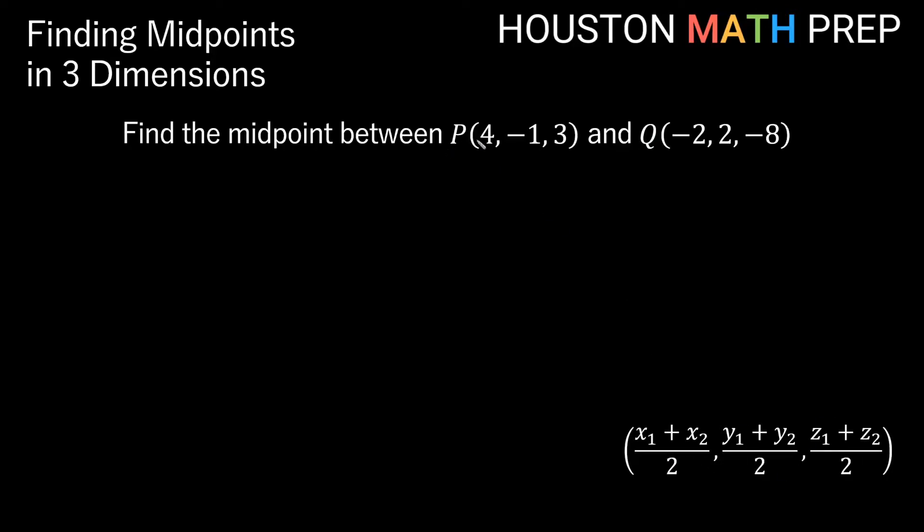I've got my formula down here if I want to think of it this way. So this is my first point P, so I'll think of this as x1, y1, and z1. And over here with point Q, which is my second point, I'll think of those as my second x value, my second y value, and my second z value, so x2, y2, z2.